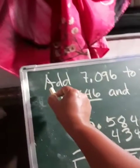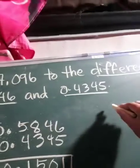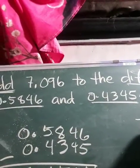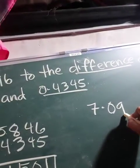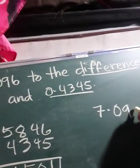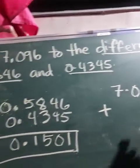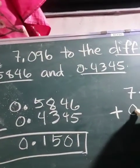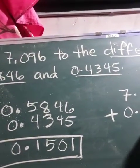Now we're going to add. Add means plus. So we have 7.096 plus 0.1501.